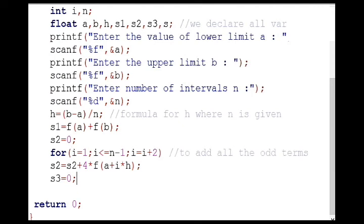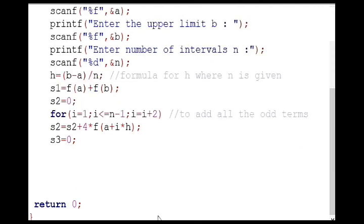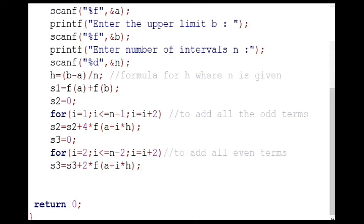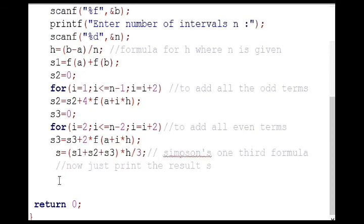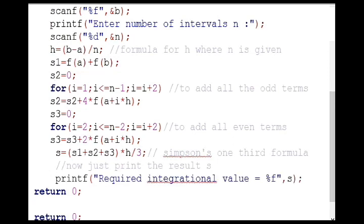Again we initialize the variable s3 with 0 and start the for loop for adding all the even ordinates. Finally, we write the formula for Simpson's one-third rule: s equals (s1+s2+s3) into h by 3, and print the result s.